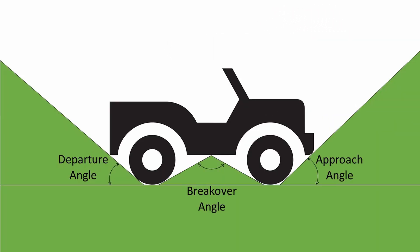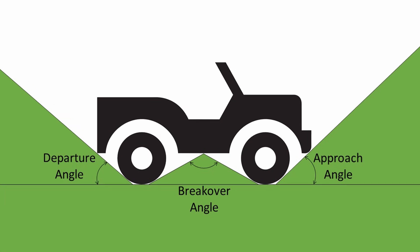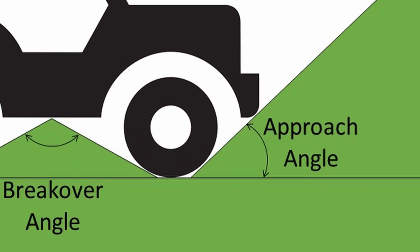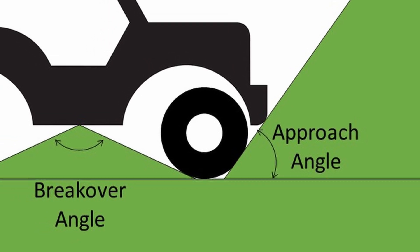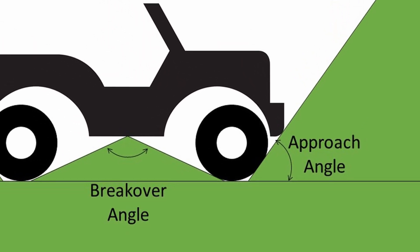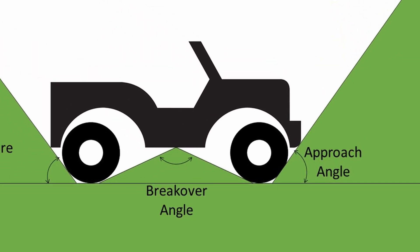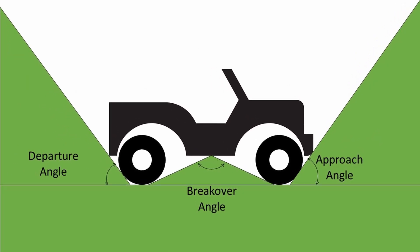So how can we influence approach, break-over, and departure angle? The most obvious way is by manipulating the wheelbase of the vehicle. If we make the wheelbase longer by pushing the front axle forwards, that improves the approach angle; pushing the back axle back improves the departure angle. The compromise though is that the break-over angle becomes much worse.